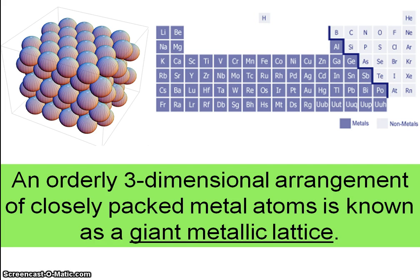So these closely packed metal atoms have an orderly three-dimensional arrangement, and this is known as the giant metallic lattice. Giant because the structure is made up of millions of atoms.